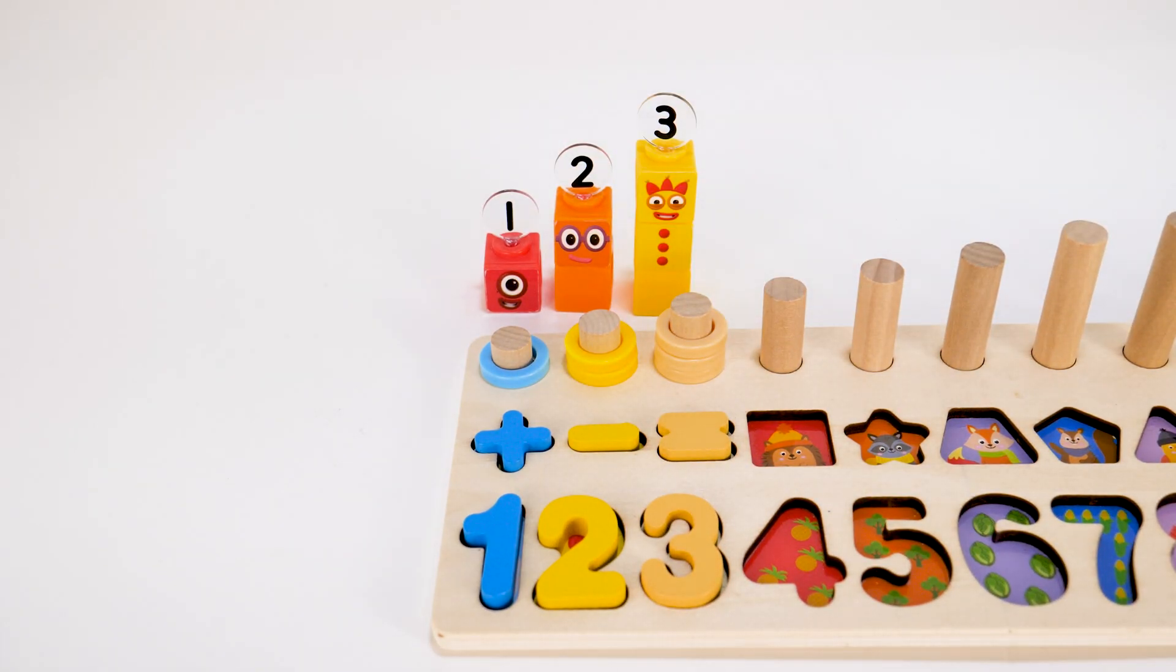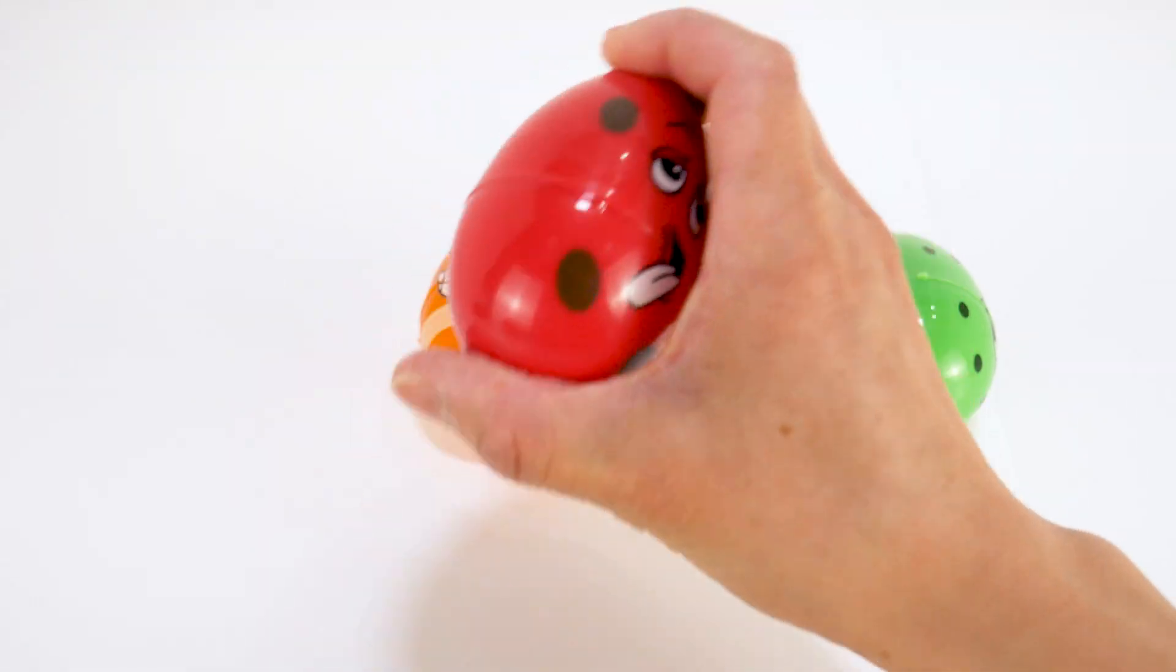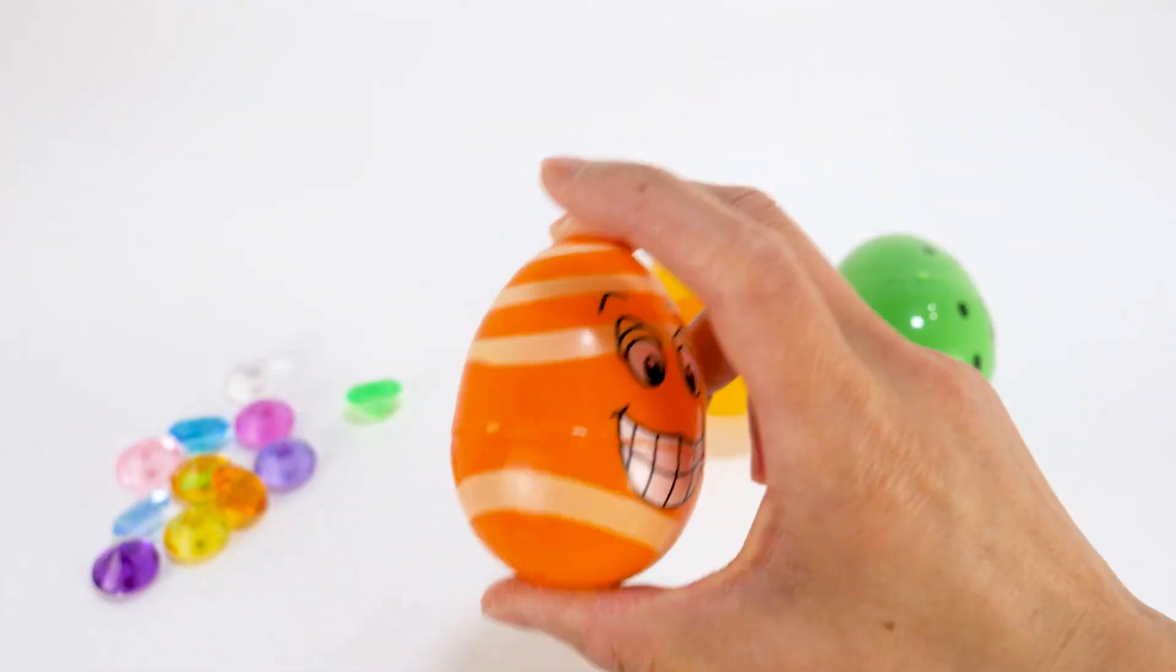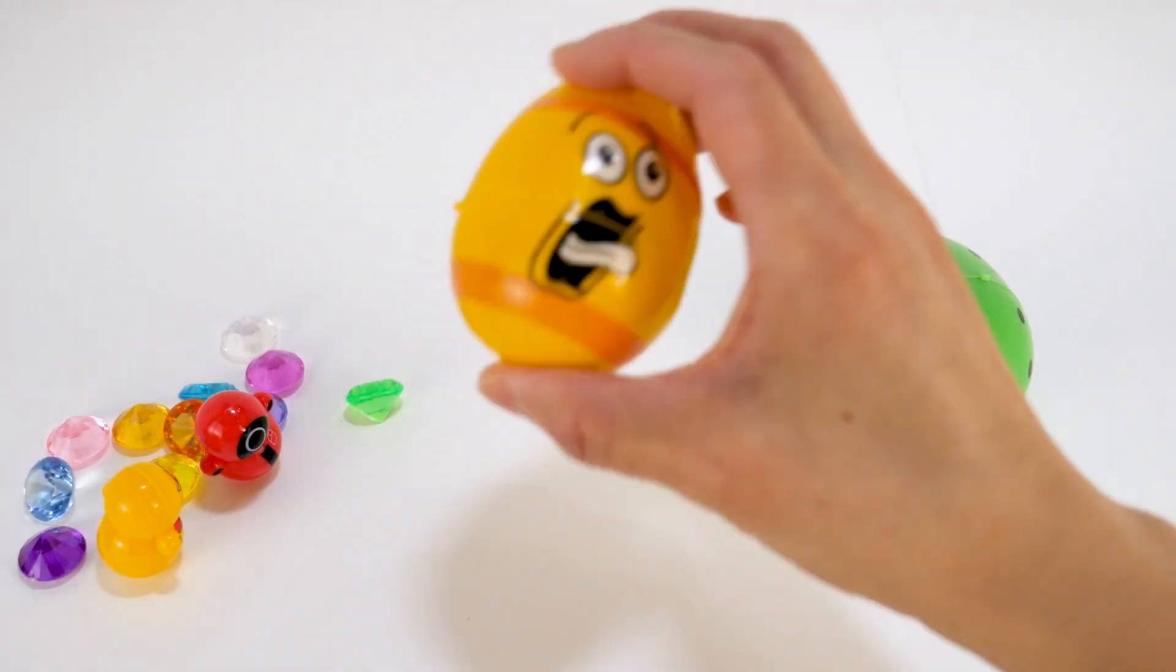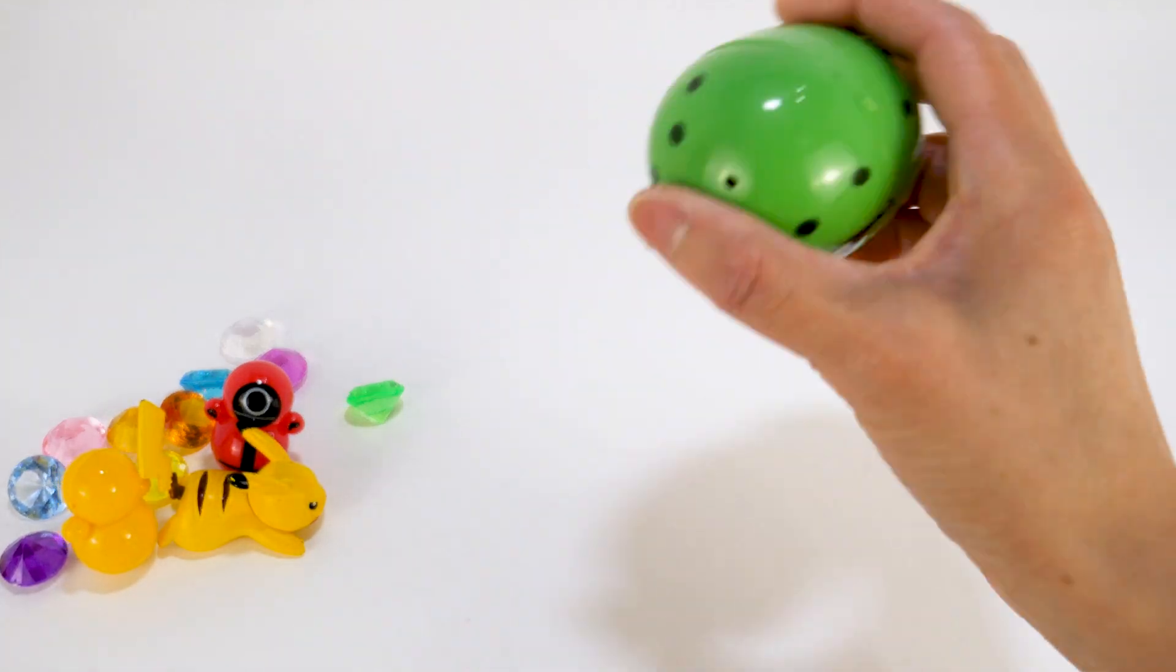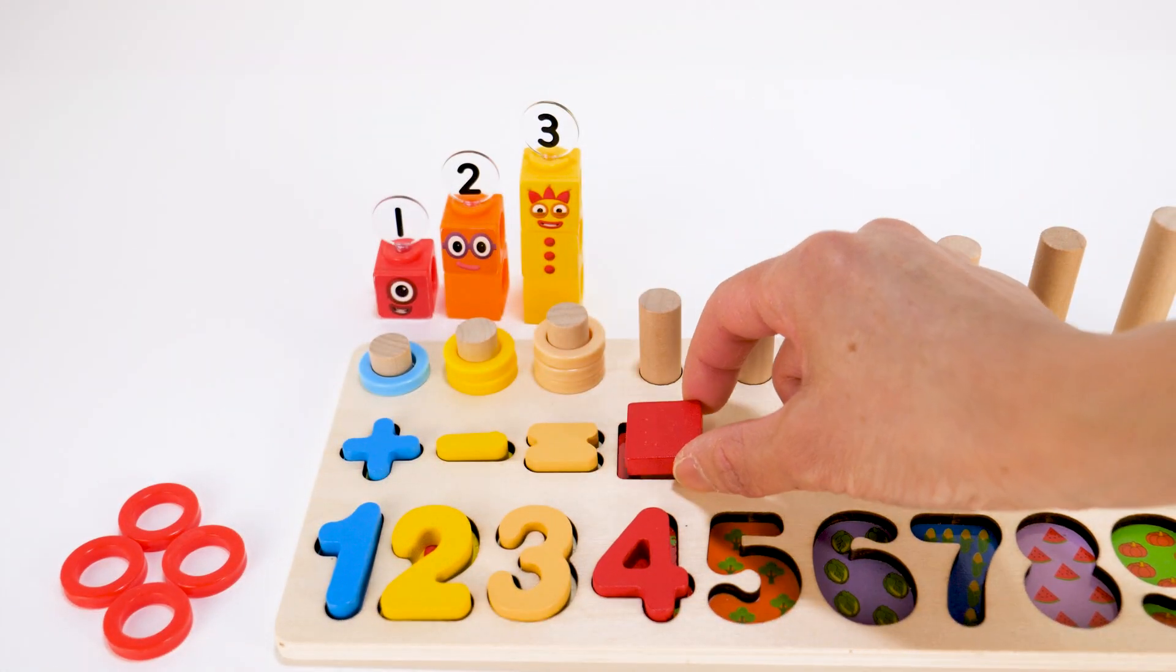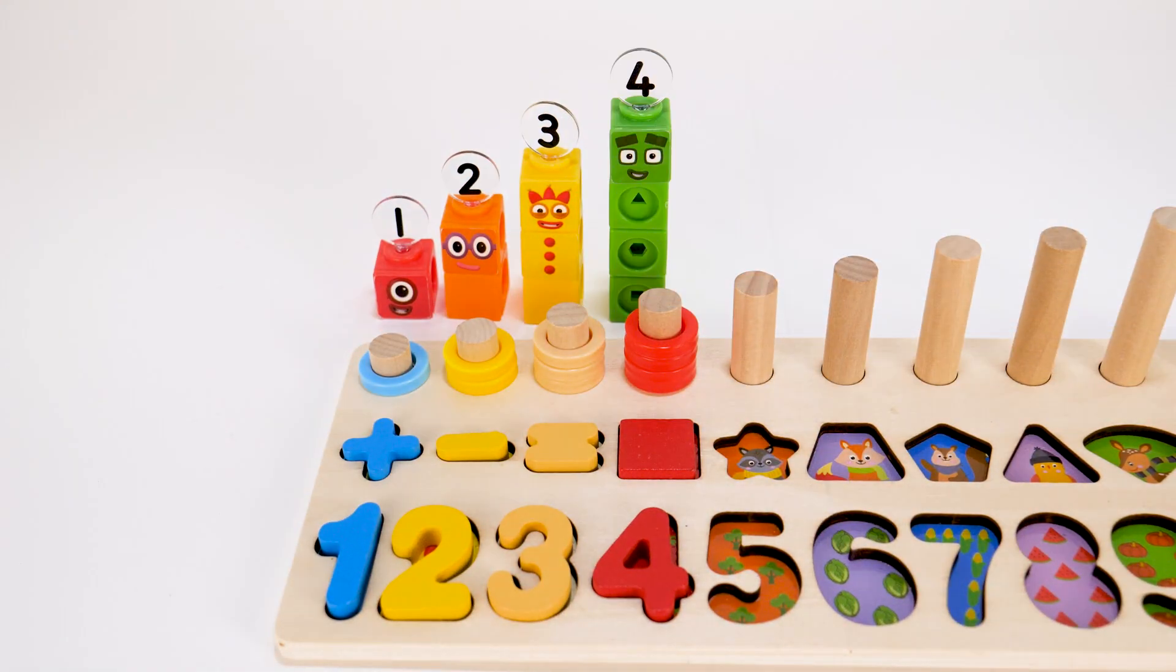We got number block three. There are four eggs. I wonder what surprises are inside. One, two, three. Cute wobbly toys, it's Pikachu! A puzzle piece, the number four. Square. One, two, three, four. Welcome back, number block four.